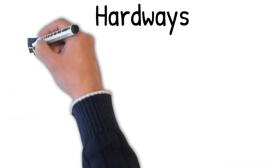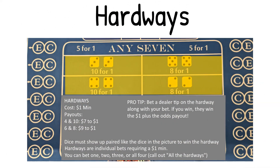Hard ways. Cost: one dollar minimum. Payouts: four and ten pay seven to one; six and eight pay nine to one. The dice must show up paired to win the hard way. Hard ways are individual bets requiring a one dollar minimum — you can bet one, two, three, or all four. Simply call out all the hard ways and toss in your money to the center. Pro tip: bet a dealer tip on the hard way along with your bet — if you win, they win the dollar plus the odds payout.